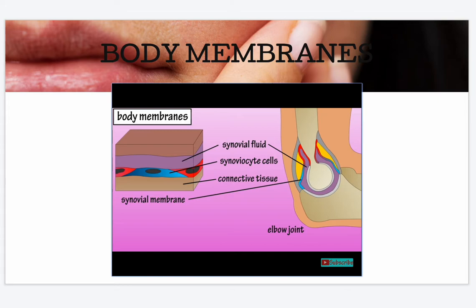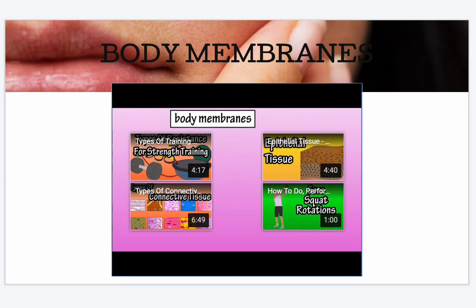Synovial membranes line some of the joints in the body. They are composed of connective tissue with a thin layer of synoviocyte cells. The cells secrete synovial fluid that fills the joint cavity, which helps to reduce friction. And that covers the basics on the body membranes.